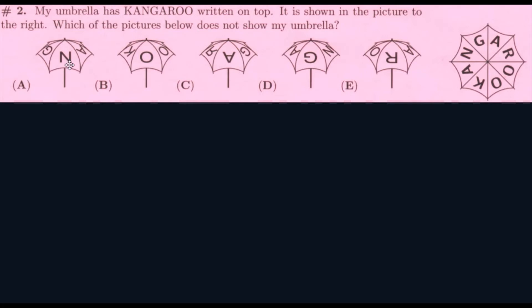So, let's look at A. The A is right, the N is right, and the G is right. Let's look at B. The O and the O and the K are all right. And now, if you look at C, the G is right, the A is right, but the R is backwards. Because the R should have the bend towards the left, but this one has it towards the right. So, our answer would be C.